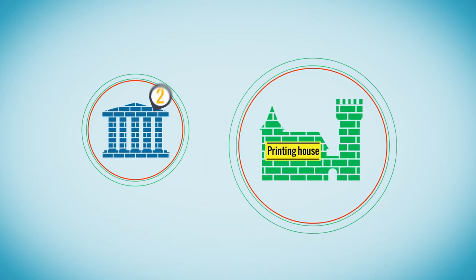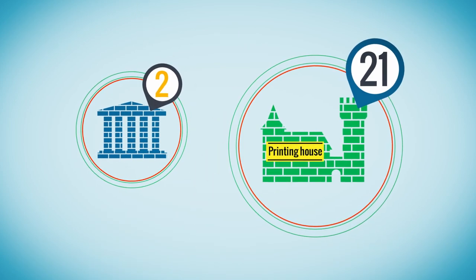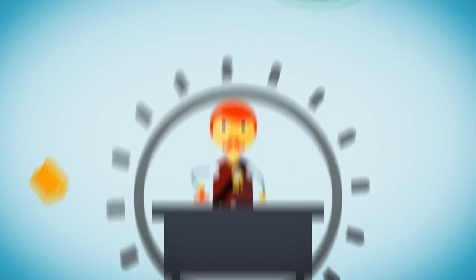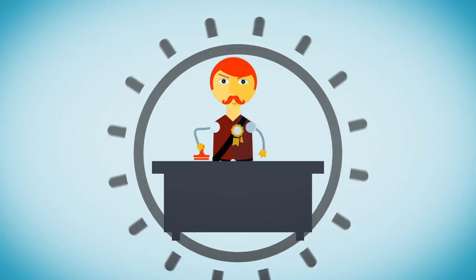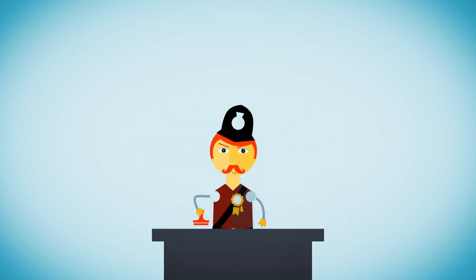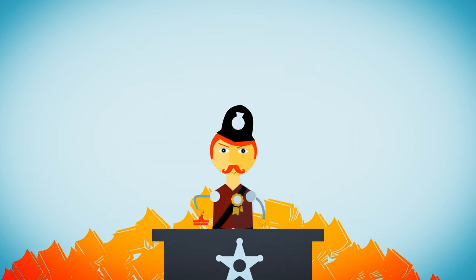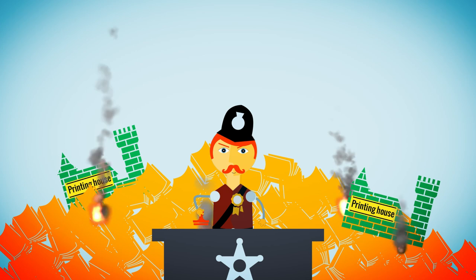The right to print was restricted to two universities and to the 21 existing printers. Books had to be first approved by the Crown censor. And the stationers acted as a for-profit information police force with a right to confiscate and destroy any unauthorized presses or books.